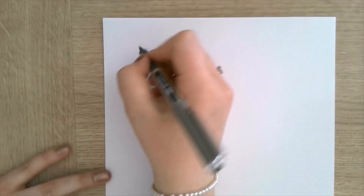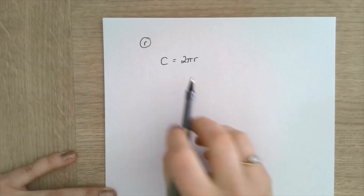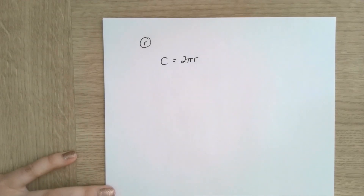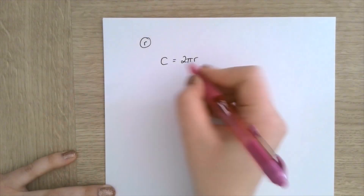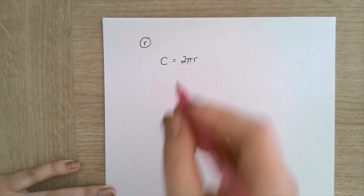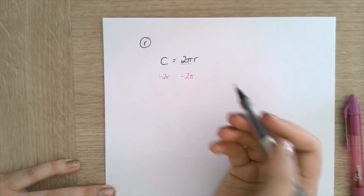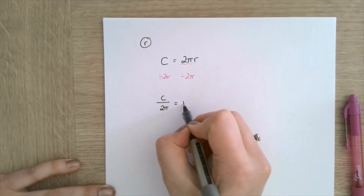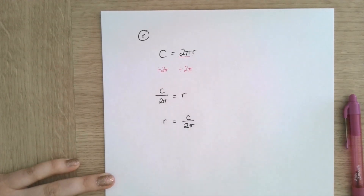My next example: make r the subject of C equals 2 pi r. I've included this one because pi can look like a variable, but remember — when you type it into a calculator, it's just a number: 3.1 something. So we treat it as a number. To make r the subject, I divide both sides by 2 pi, leaving r equals C over 2 pi.